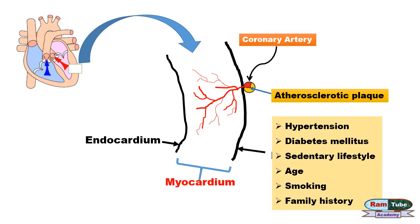Ingestion of stimulants like caffeine or smoking cigarettes lowers the oxygen level in blood, which can trigger an angina episode. Family history or genetic predisposition may also accelerate atherosclerosis.